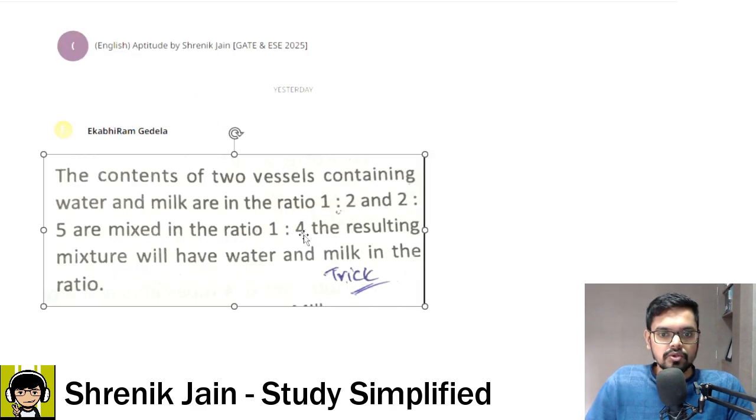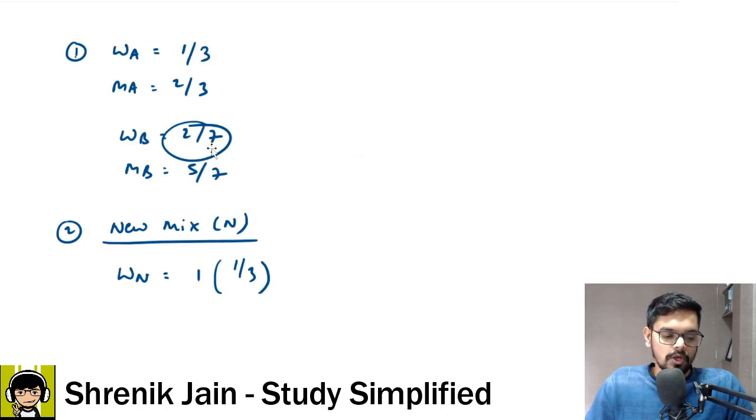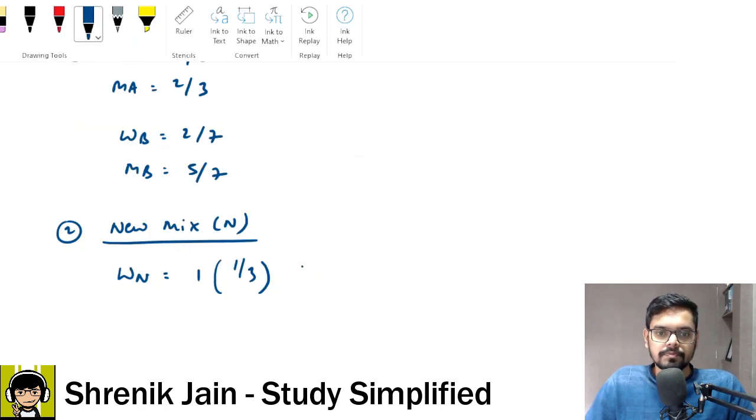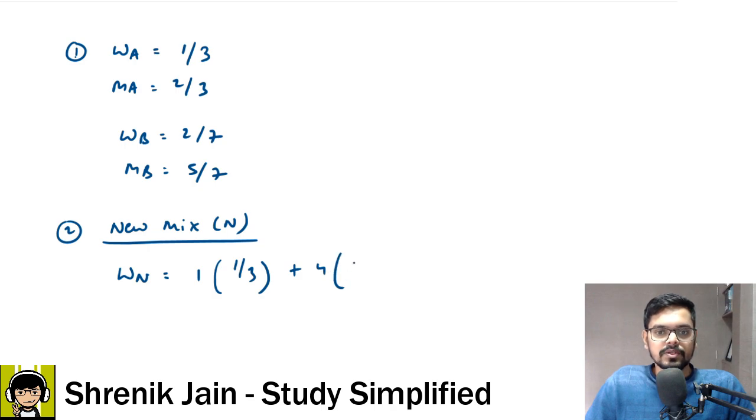Check it out, 1:4. So 4 parts of this. 4 parts means 4 times multiplication. So 4 times multiplication of water in the vessel B. Then you will get the total water in your new mixture. If you simplify this, what you will get is 7 goes here, then 8 3s are 24. 24 plus 7 becomes 31, 31 divided by 7 into 3 that is 21, right?